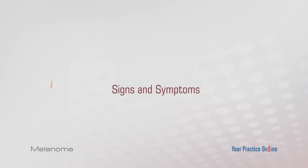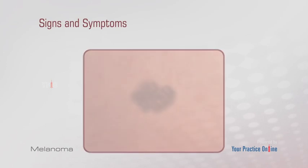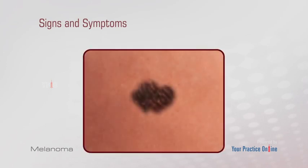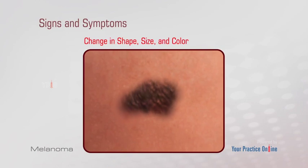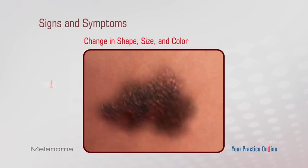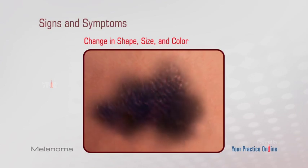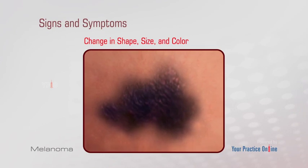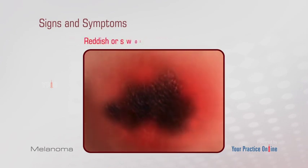Melanoma is often painless and usually produces the following signs. The first sign is a change in shape, size, and color of an existing mole. It may also appear as a new irregular mole, and may appear black or blue-black in color. They are typically located on the back, the shoulders, or on the back of the legs. They often have an irregular border and uneven colors. Skin may become reddish or swollen and may be painful.